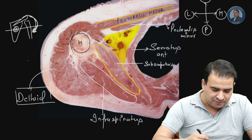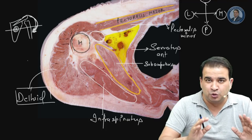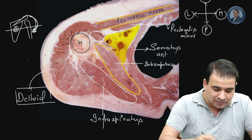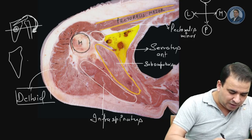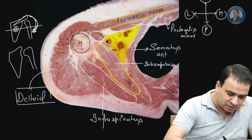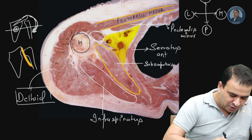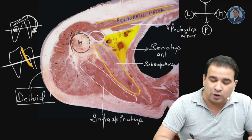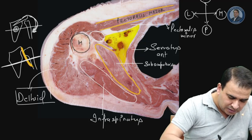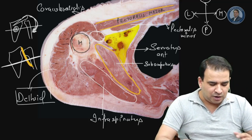There is one more important muscle to identify apart from pectoralis major, pectoralis minor, serratus anterior, infraspinatus, subscapularis, and deltoid. This muscle is present on the medial side of the shaft of the humerus and toward the lateral side of the axilla. The muscle coming from the coracoid process and inserting onto the medial side of the shaft of the humerus is the coracobrachialis muscle, running along the shaft — the coracobrachialis also forms part of the lateral wall of the axilla.